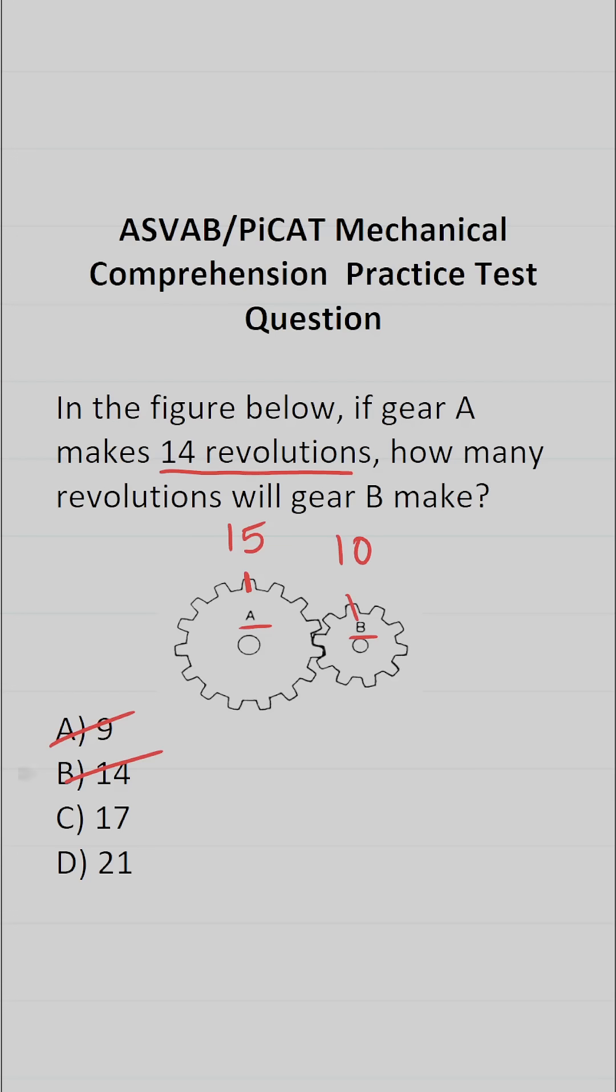All right, so the easiest way to figure this one out is, again, gear A has 15 teeth. We're going to multiply that by the number of revolutions it makes, which is 14. That's going to be equal to the number of teeth gear B has, which is 10, times the number of revolutions that it makes, which is unknown. So we'll call that X.